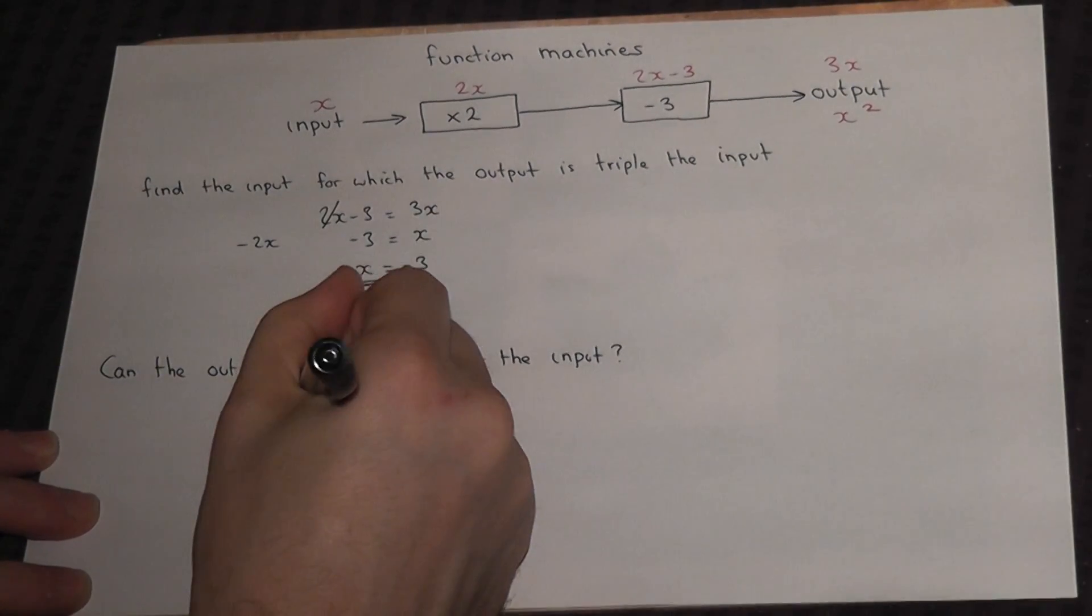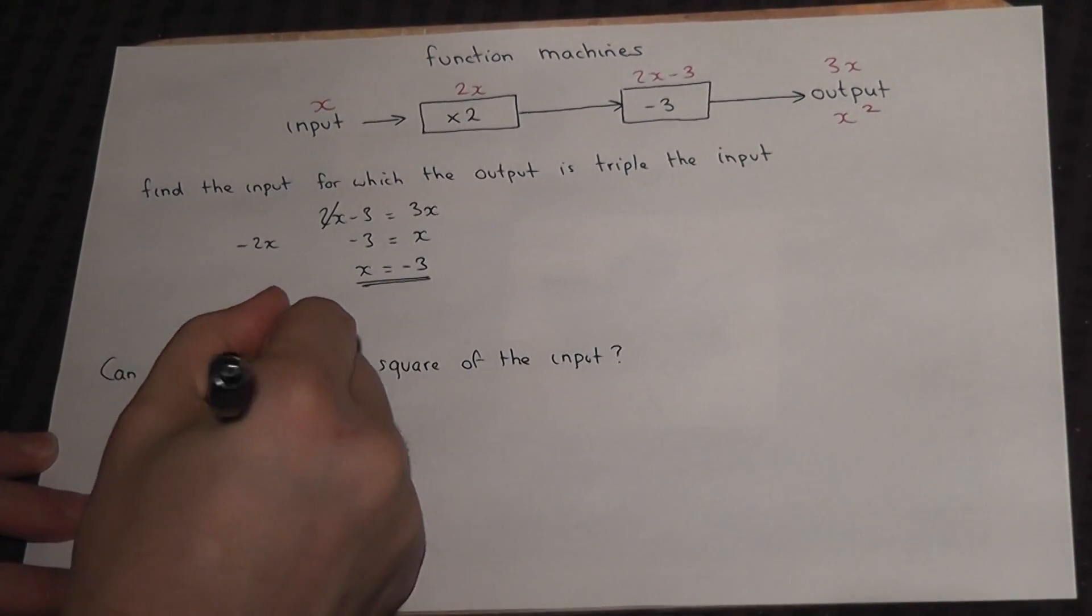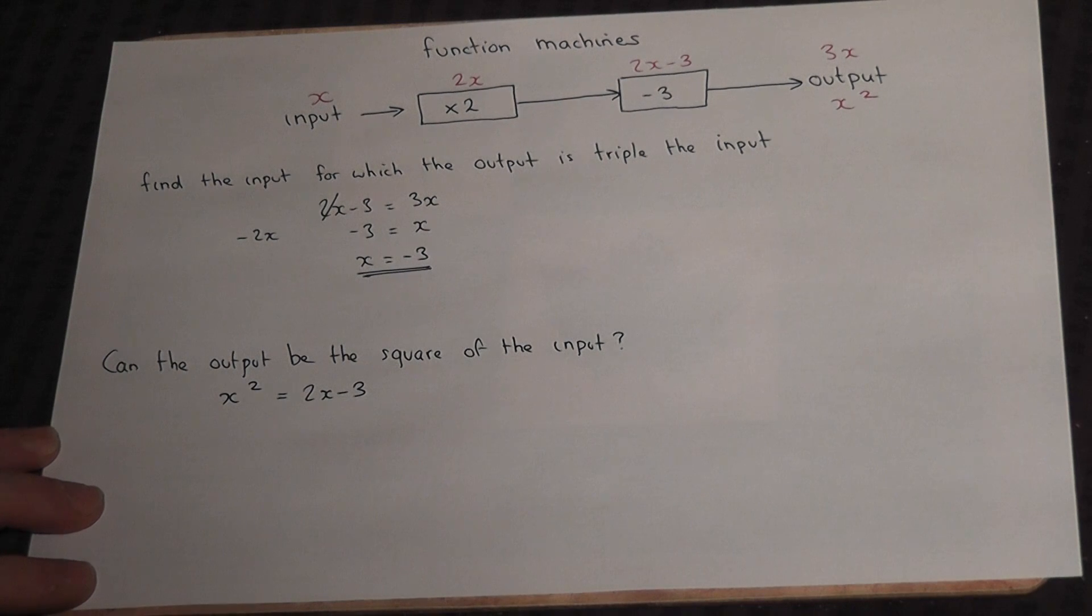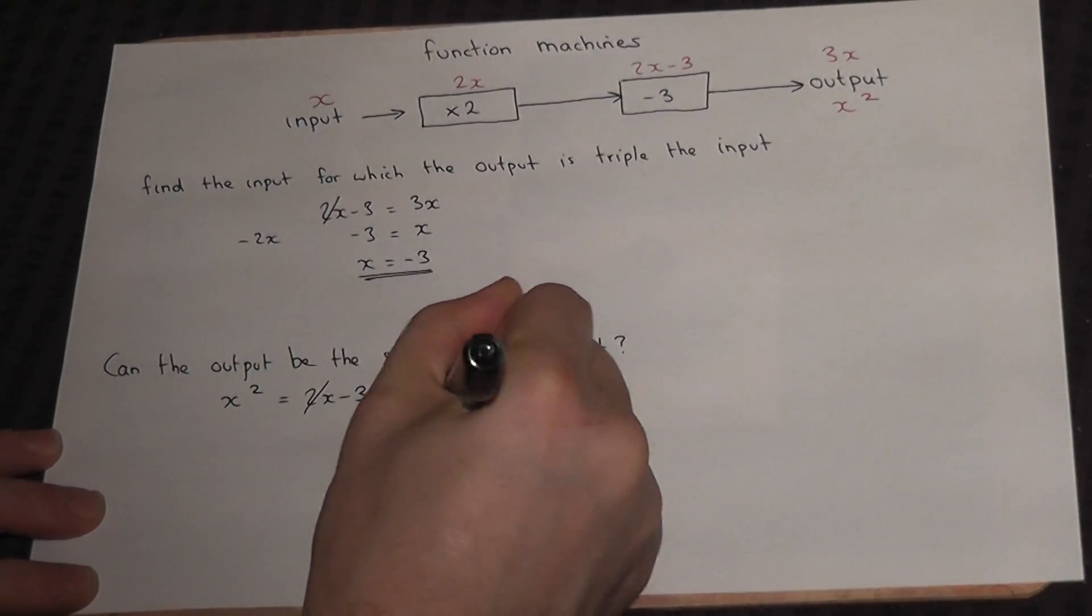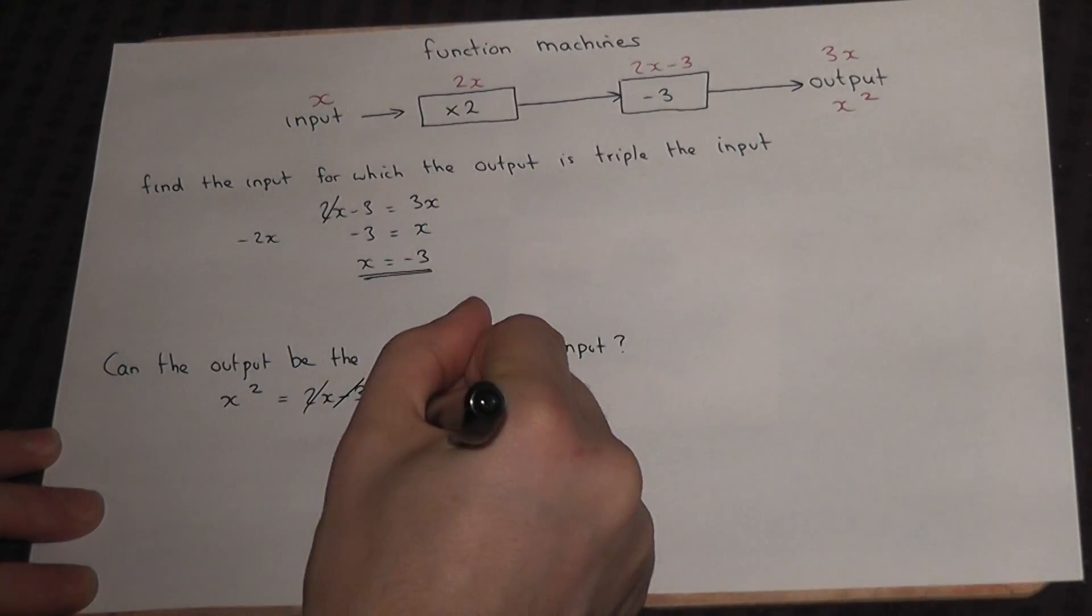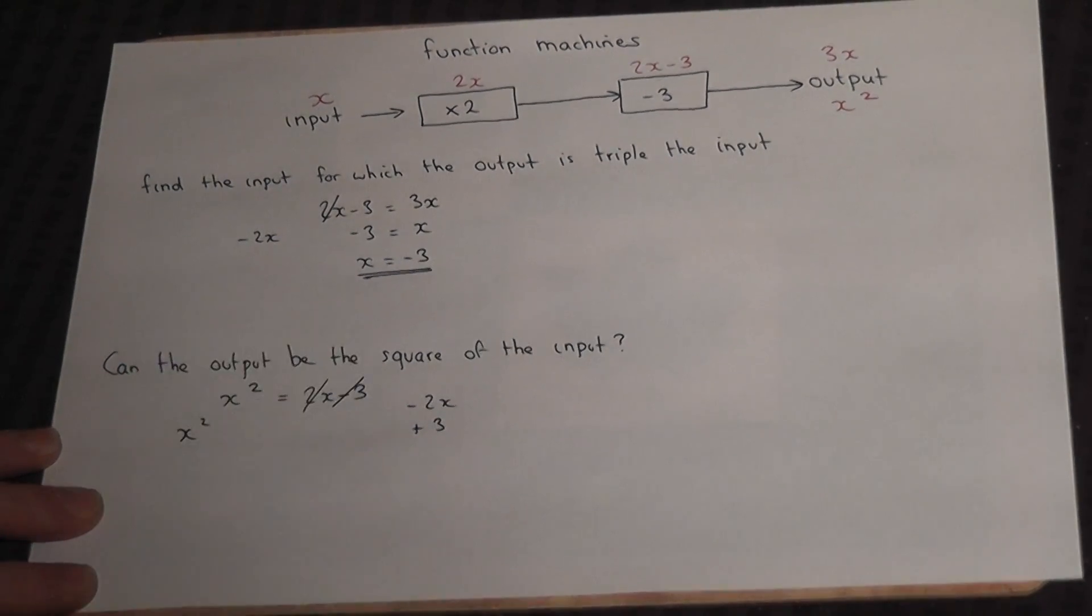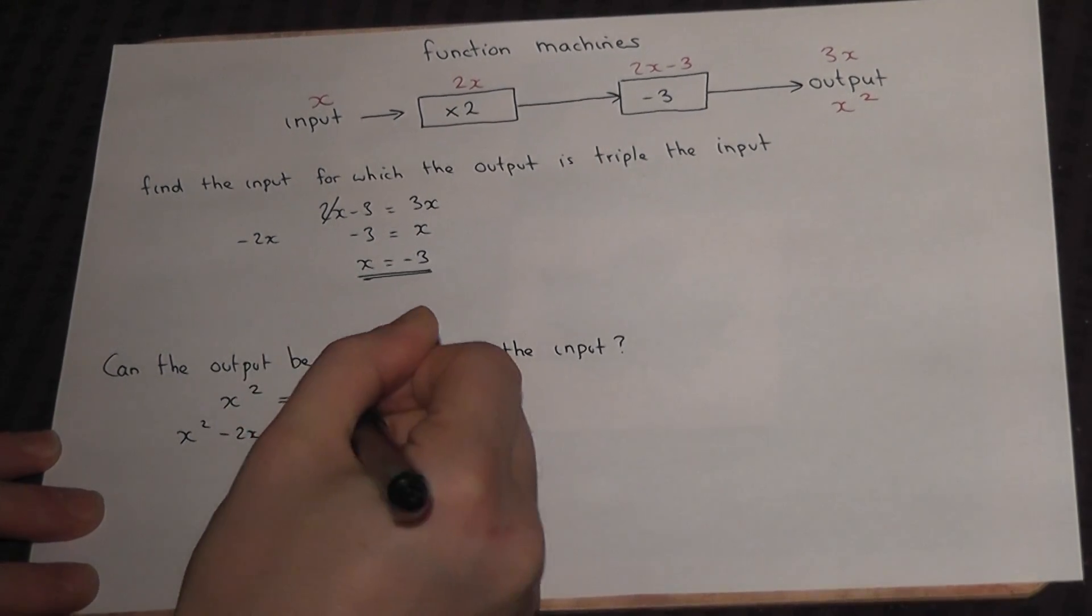So could 2x minus 3 equal x squared? Now to solve this, we must try to get all the terms to one side. So if I were to take away 2x and add 3, I would get x squared minus 2x plus 3 equals 0.